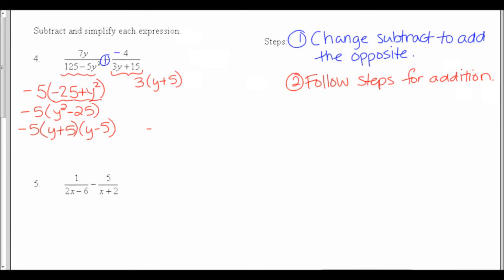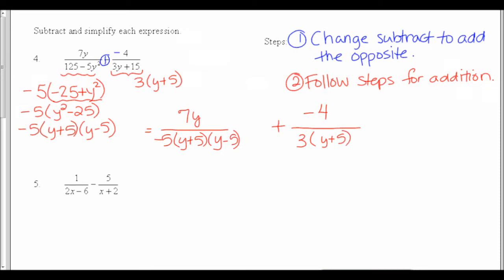Now I've done all my factoring and I'm ready to go to subtraction. My first fraction has 7y on top and the bottom factored into negative 5 times y plus 5 times y minus 5. My second fraction — remember I changed this to add the opposite — so it has a negative 4 on the top and on the bottom I have the 3 and the y plus 5. In the first fraction, I'm just missing a 3, so I need a 3 on the top and the bottom. On the second fraction, I'm missing a negative 5 and a y minus 5, so I'm going to put both of those on the top and bottom.